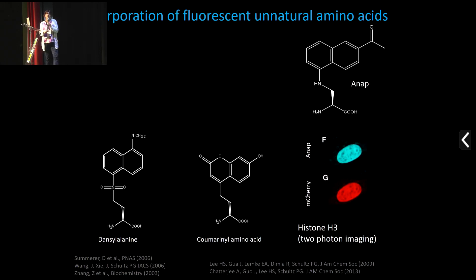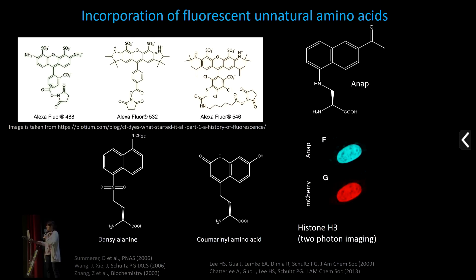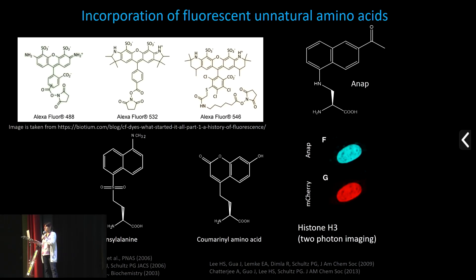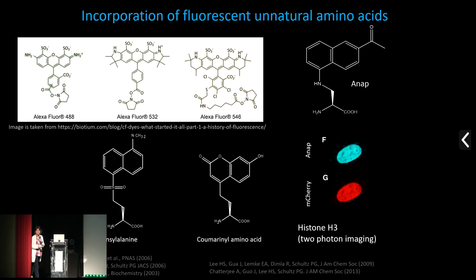Here are some examples of fluorescent unnatural amino acids — they can be used for different types of imaging and have their own advantages and disadvantages. The main disadvantage is that none of them have the most optimal photophysical properties needed for advanced microscopy. Something like Alexa dyes or Cy5 dyes — when you look at the structure of these fluorophores, they are too large to be incorporated as a natural amino acid, because they have to physically fit into the ribosome.